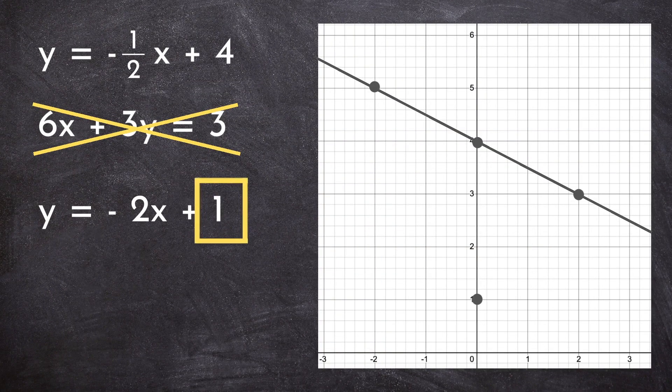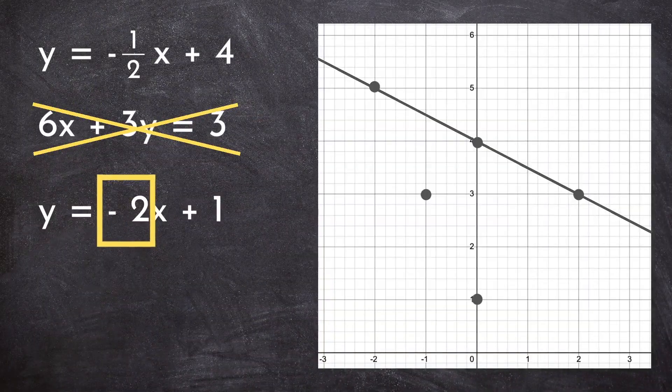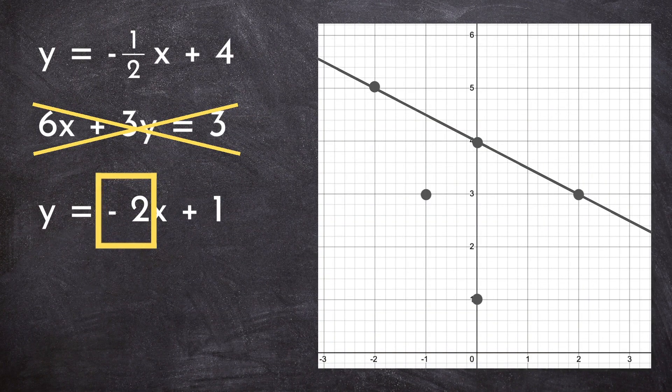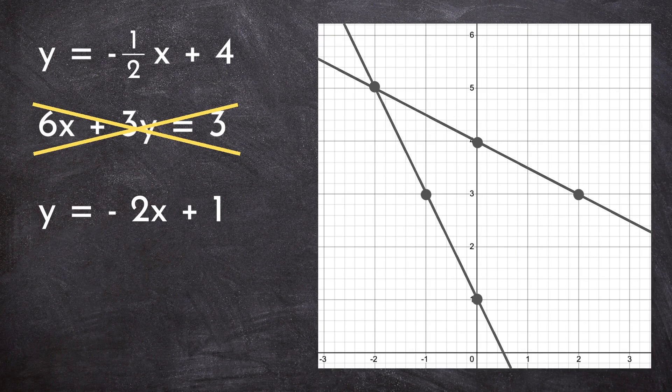Now the rest of this process is exactly the same as what we did before. We start by plotting the y-intercept, which in this case is 1, and we use our slope of negative 2 to find a few other points on our line. The last step is connecting these points with a straight line, and my goodness, they intersect!